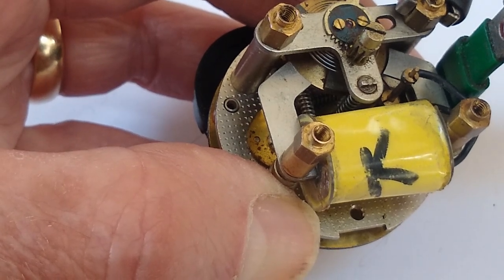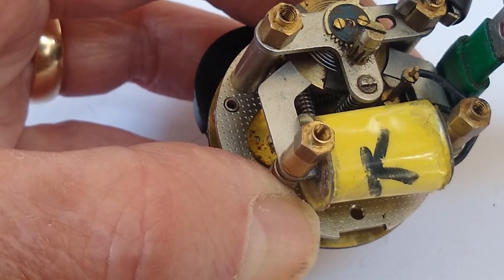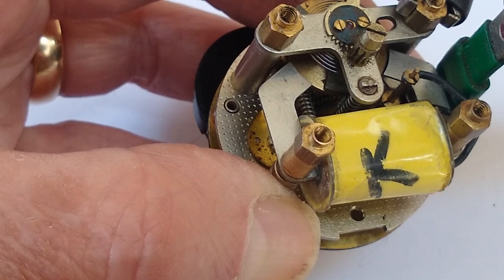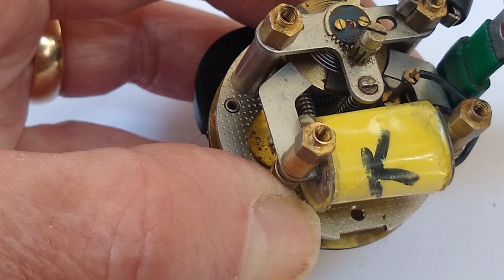Hi, this is Mark Willows from Clocks for Classics and I just wanted to show you a short video on how to test the solenoid coils on Smiths and Jaeger car clocks.